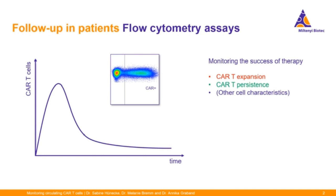By monitoring circulating CAR T-cells, the success of the therapy can be tracked. You might want to look whether CAR T-cell expansion is taking place at around one to two weeks after infusion, and if some CAR T-cells persist over longer periods of time. Additionally, you might also want to analyze CAR T-cell differentiation, exhaustion, proliferation, or activation.